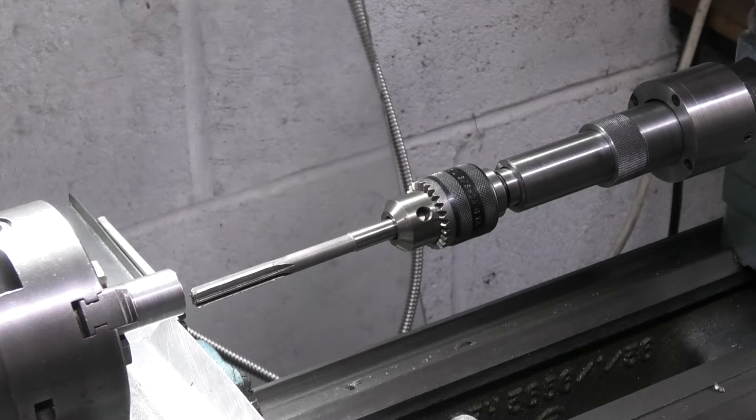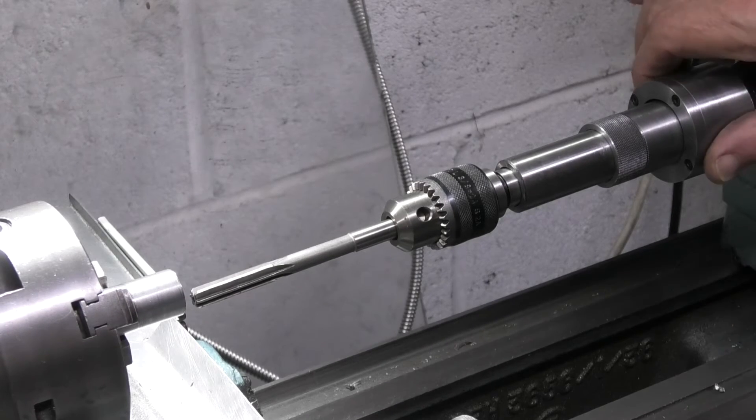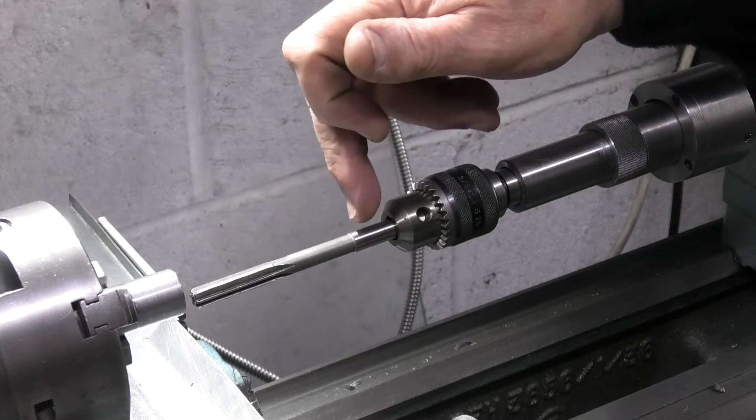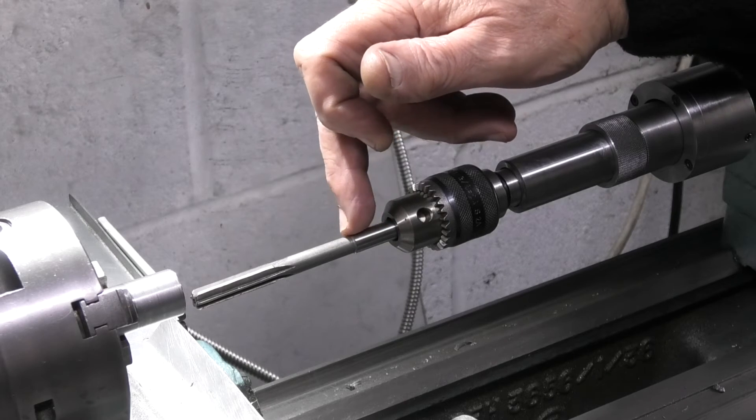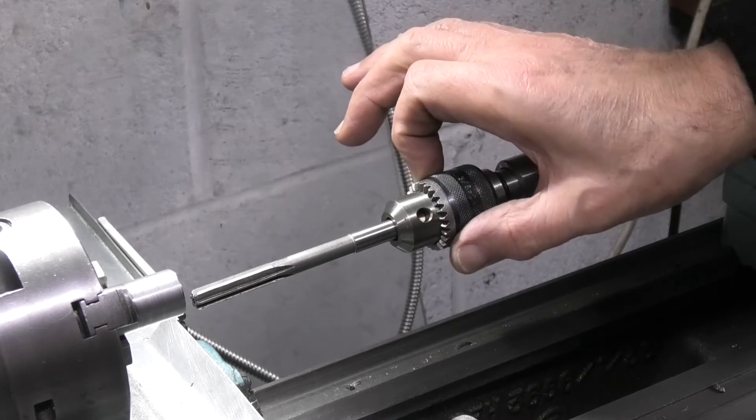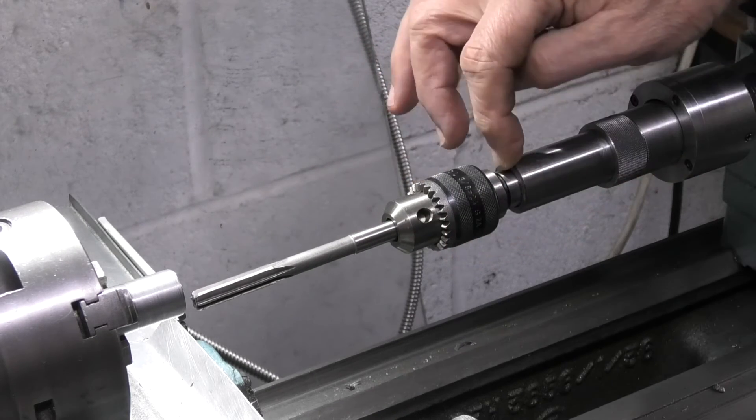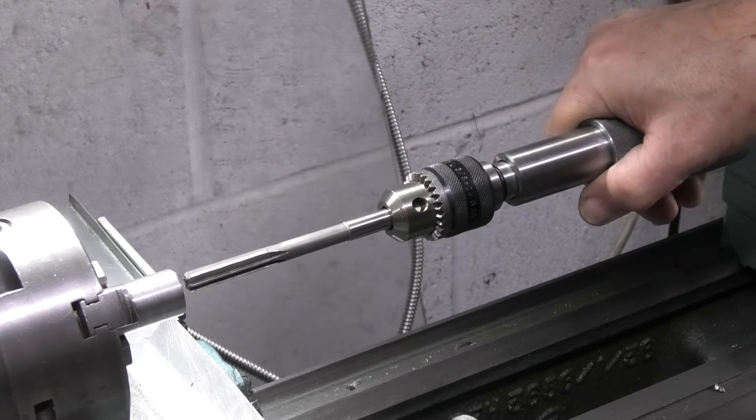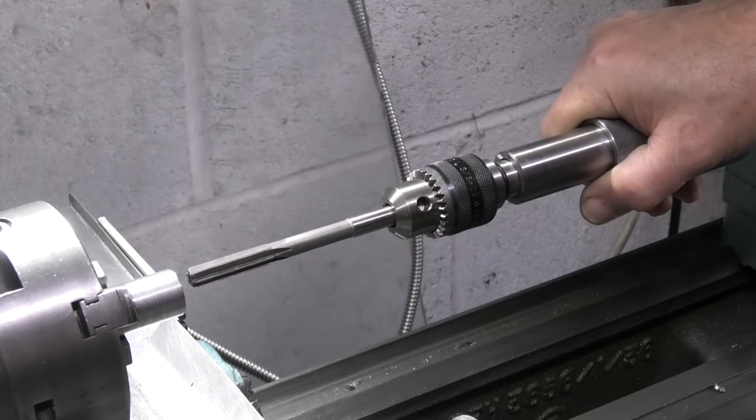This is the setup: tailstock floating reamer holder. And in this one, my reamer has a parallel diameter, so I'm holding it in a small chuck which is fitted into the end on a Morse taper. So if I hold this chuck, I can move the reamer around.